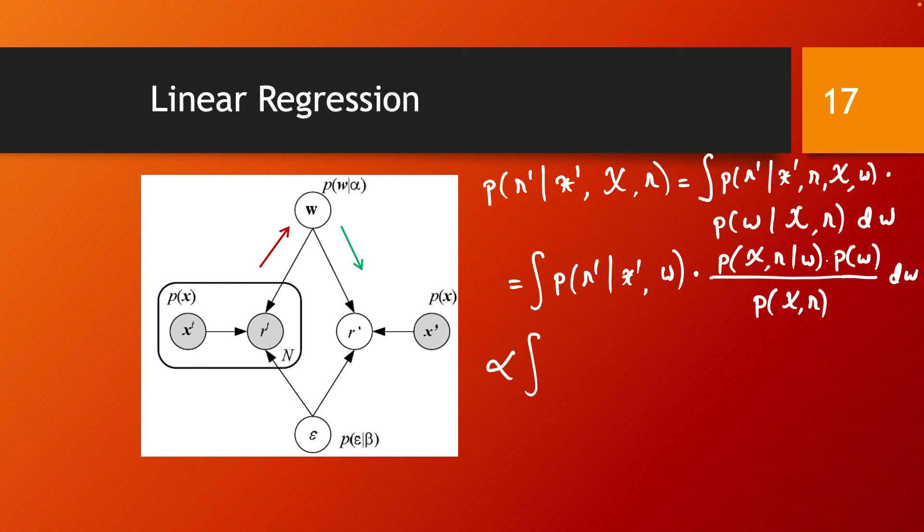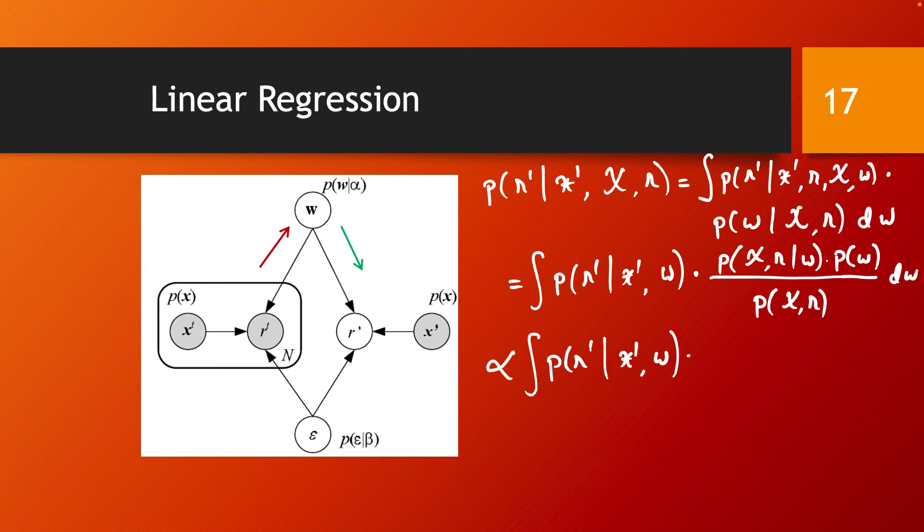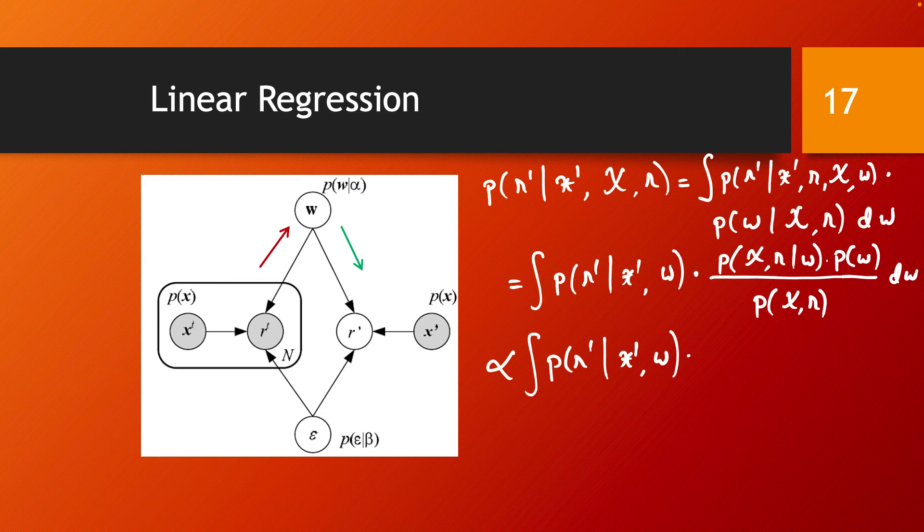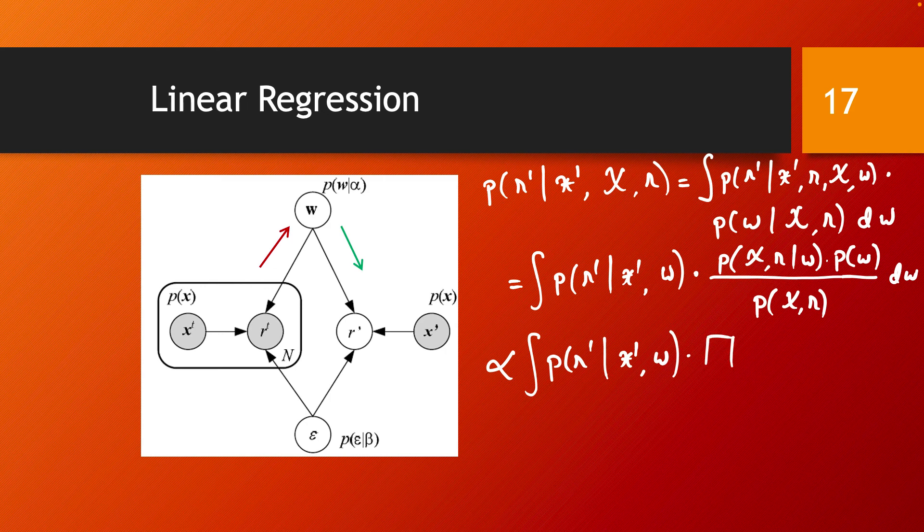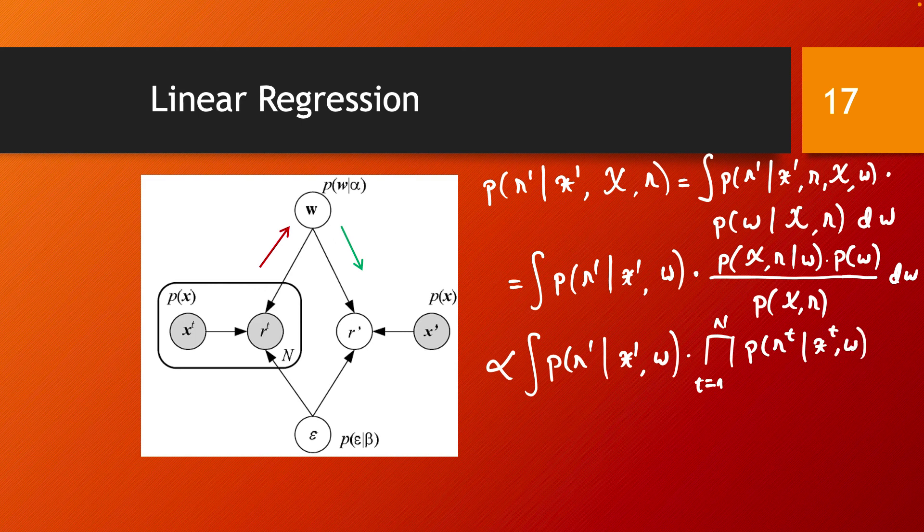So this is going to be proportional with the first term kept exactly the same. So this is probability of R prime given X prime and W. And here the point is that we have the probability of this whole dataset given W. But this dataset consists of N data points that are assumed to be independent of each other. And because of that, this global probability, this joint probability is going to be equal to the product of the individual probabilities. So this is now going to be a product by T from one to N. So this is for all the data points. And in here we are going to have the probability of RT given XT and W times the probability of W. And this is an integral again by W.